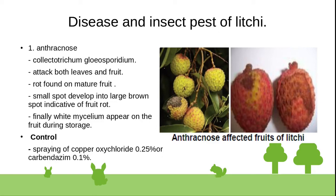Disease and insect pests of lychee. Fungal disease — Anthracnose, caused by Colletotrichum gloeosporioides. It affects leaves and fruit. Rot develops on mature fruit, appearing as large brown patches indicating fruit rot. Finally, white mycelium appears on the fruit during storage. Control: spray copper oxychloride 0.25% or carbendazim 0.1%.